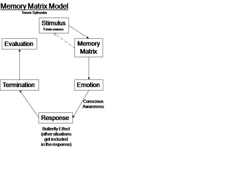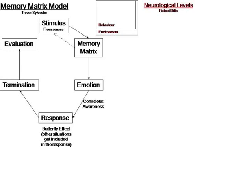Another model I found very useful for splitting up how we experience things is the Neurological Levels Model created by Robert Dilts. He split things up into five categories. First of all, the environment. When you get into a car, you're in an environment, and once in the car you start to behave in a particular way — checking the mirrors, putting the key in, putting the seatbelt on, maybe adjusting the seat.